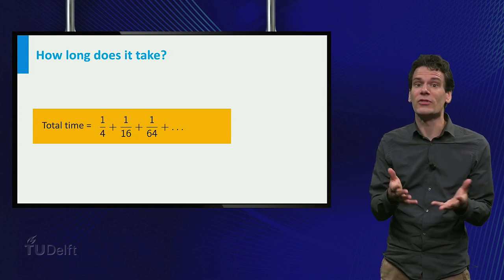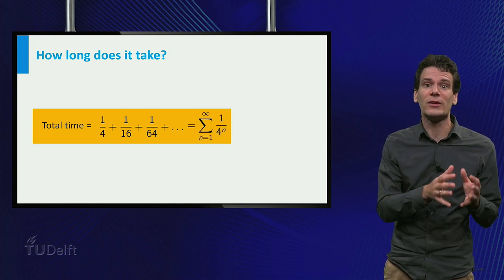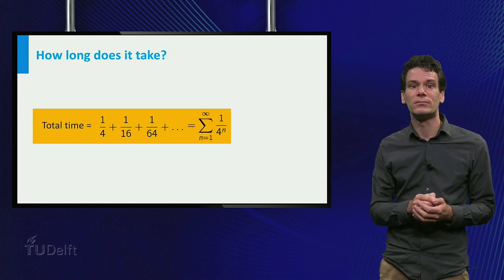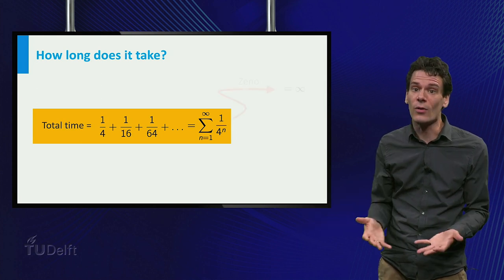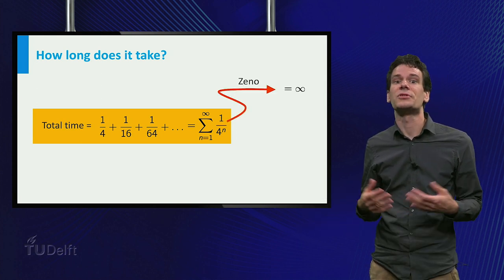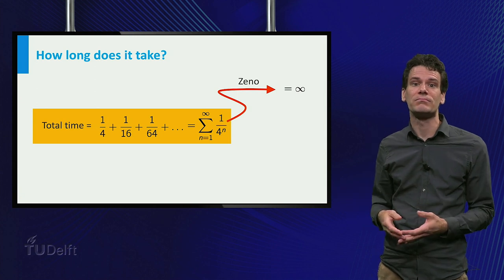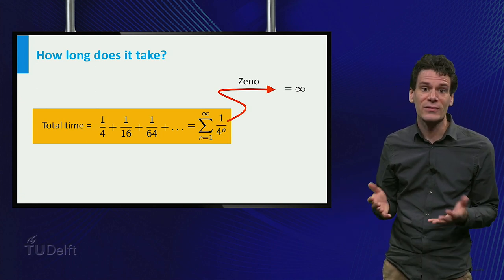Since each term is 4 times smaller than the previous term, we can conveniently write it using the sigma notation. What is the value of this series? Zeno argues that it is infinite, since we are adding infinitely many numbers. But common sense says that this cannot be right.